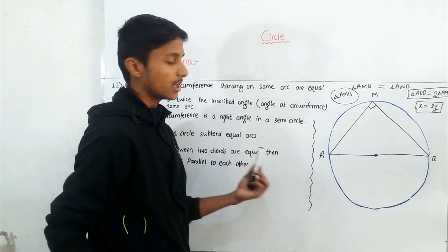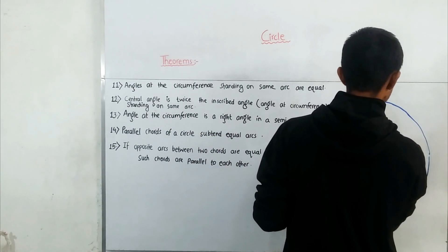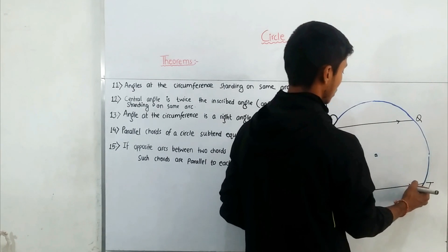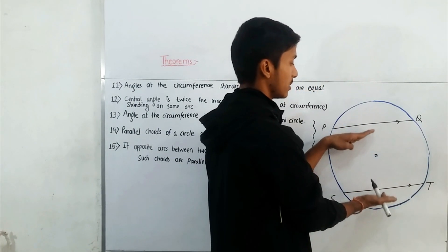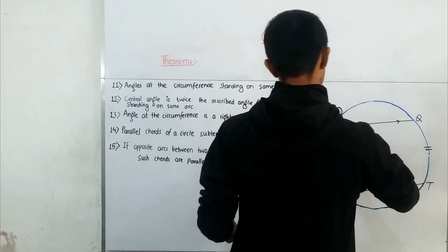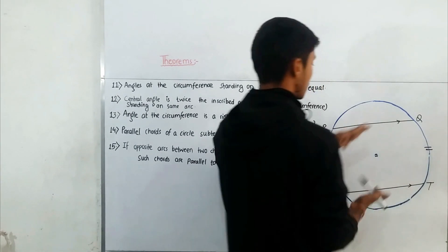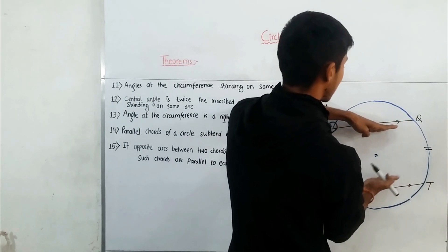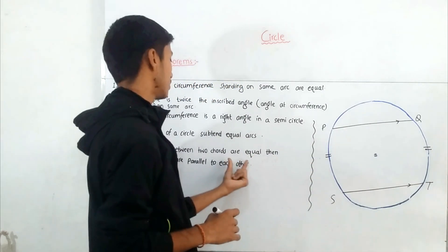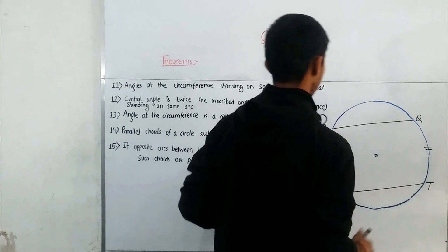Theorem 14: parallel chords of a circle subtend equal arcs. When two chords are parallel to each other, the arcs that lie between these two parallel chords and are opposite to each other will be equal. So arc PS and arc QT — the arcs subtended between the two parallel chords — are equal to each other.